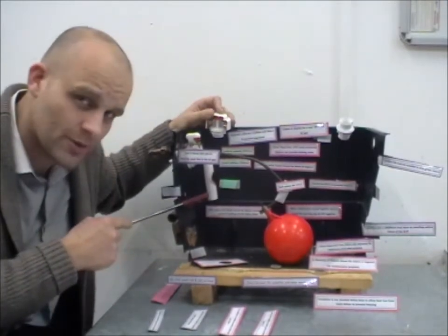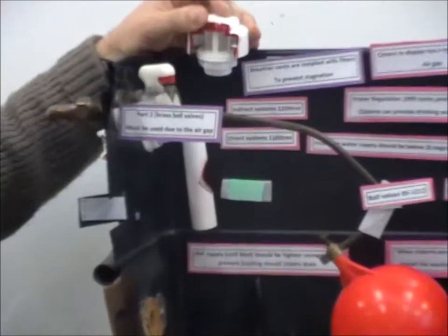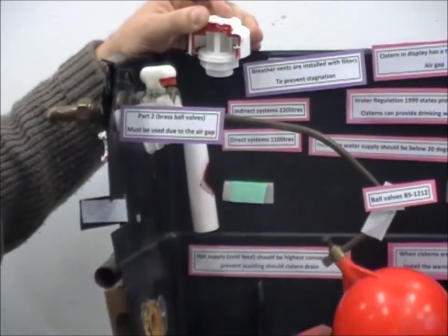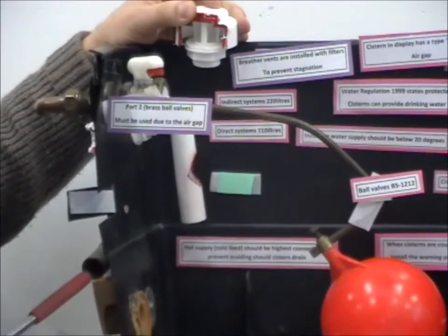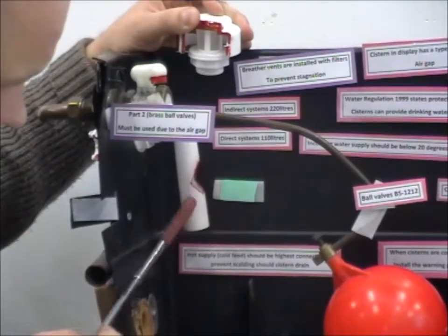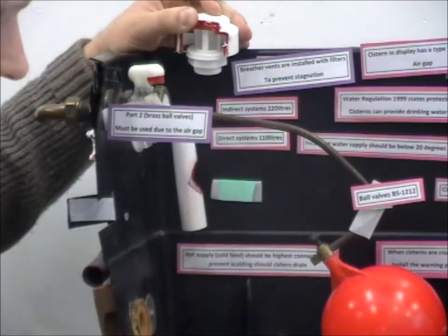Inside, we have an anti-draft tube. So the wind, or the cold, should it go up the overflow pipe, the water inside the anti-draft tube will stop the flow of the cold breeze coming in and freezing the water.